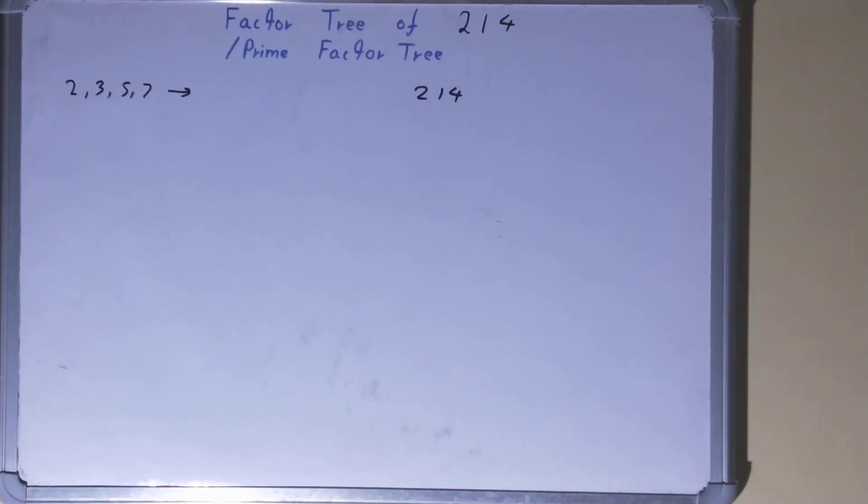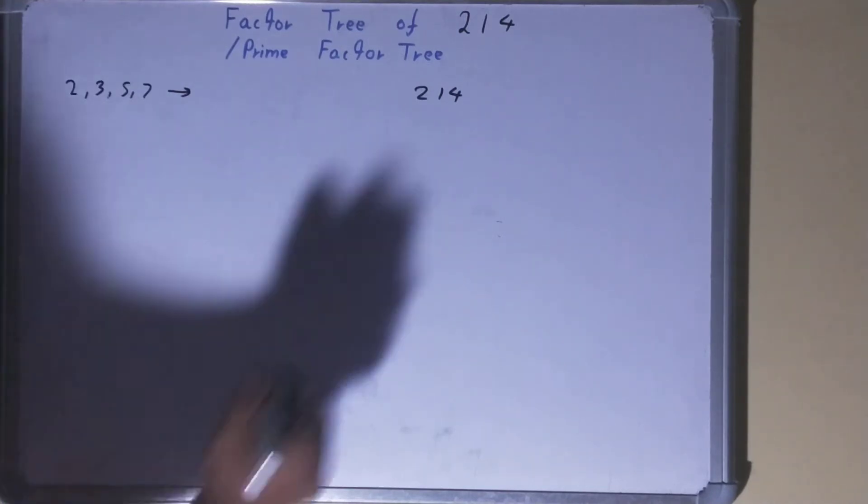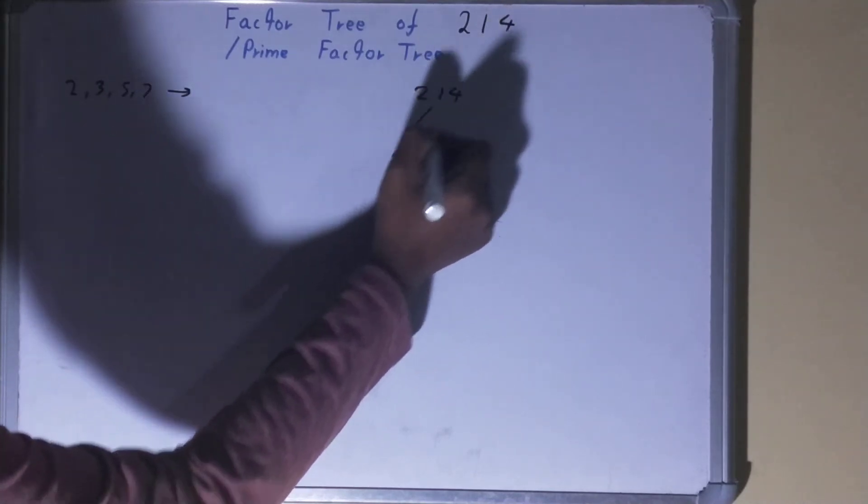know that the ending nodes or the terminating nodes of a factor tree are made up of prime numbers like 2, 3, 5, 7, and so on. All right, so what we do is we factorize the number into groups